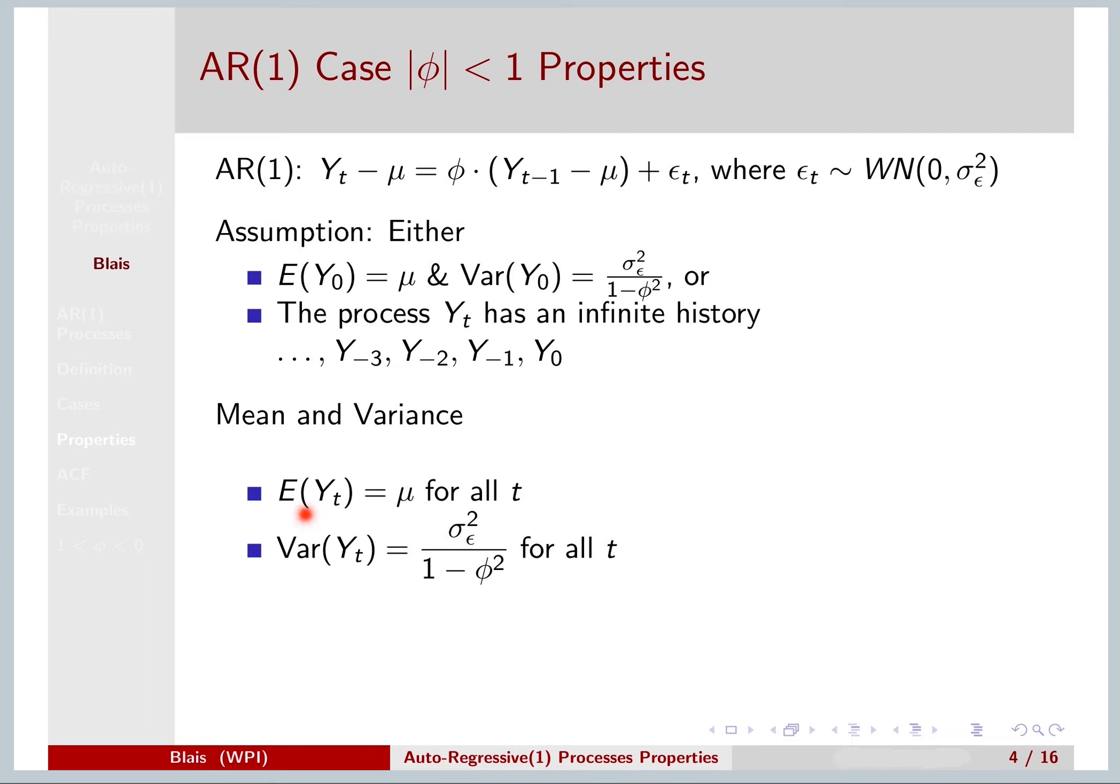Our AR1 has mean mu, and it has variance sigma epsilon squared over 1 minus phi squared. And you can derive both of these things using the fact that we have a stationary process. So the mean of Y_t and the mean of Y_t minus 1 are the same. The variance of Y_t and the variance of Y_t minus 1 are the same.